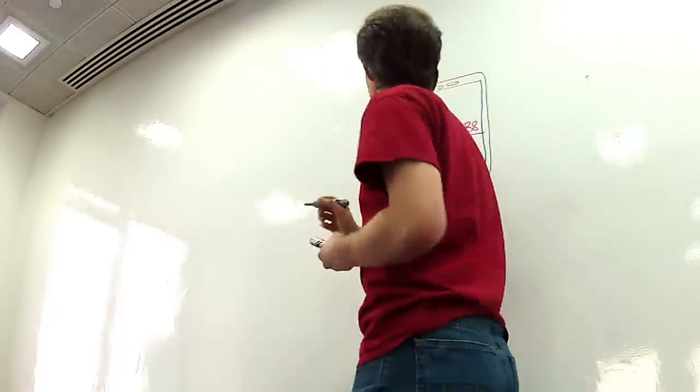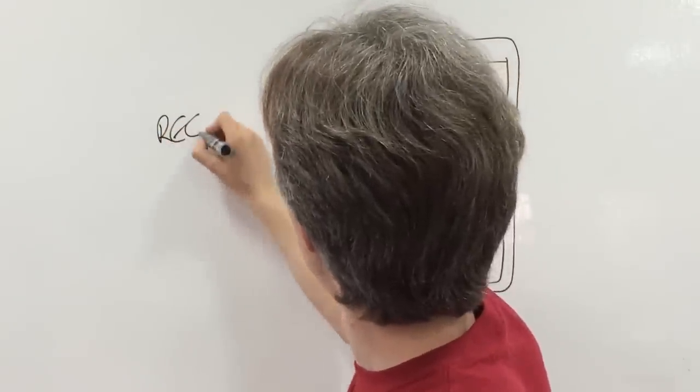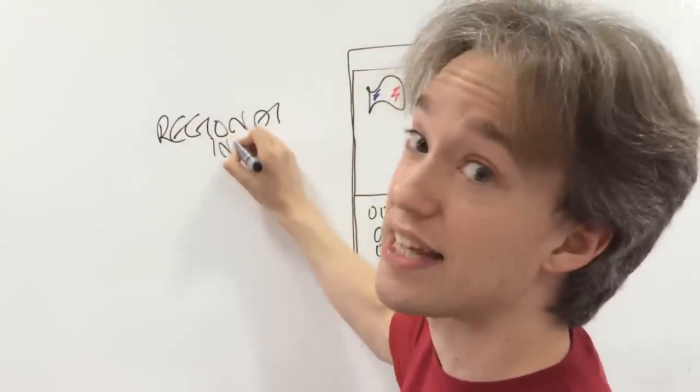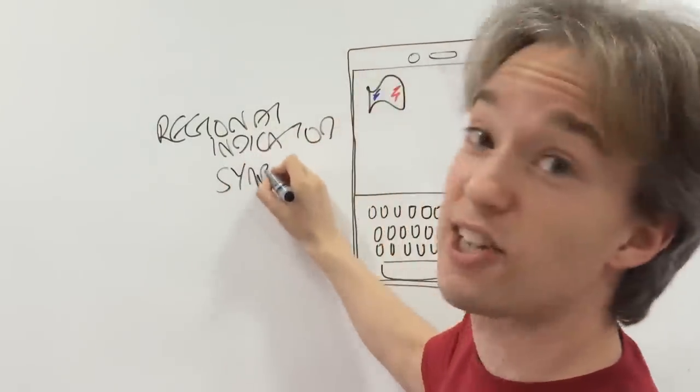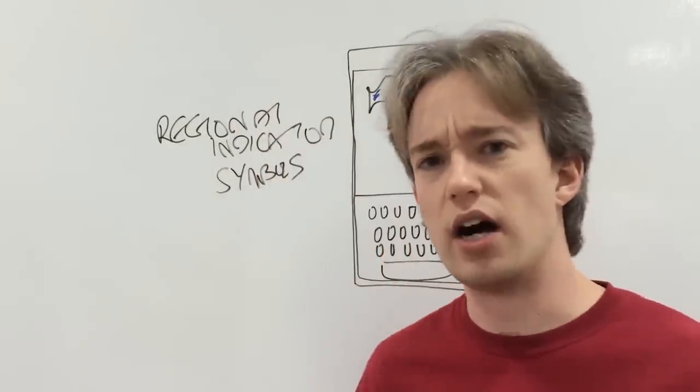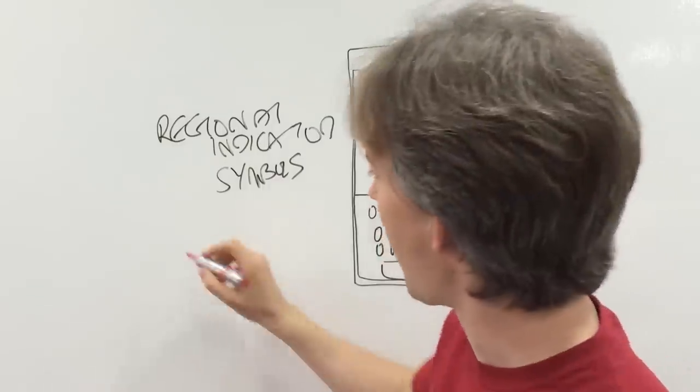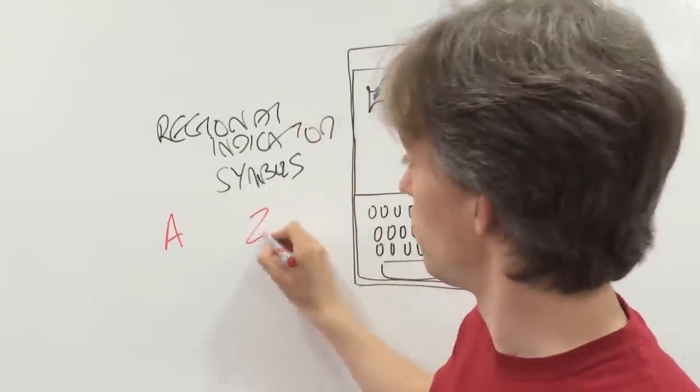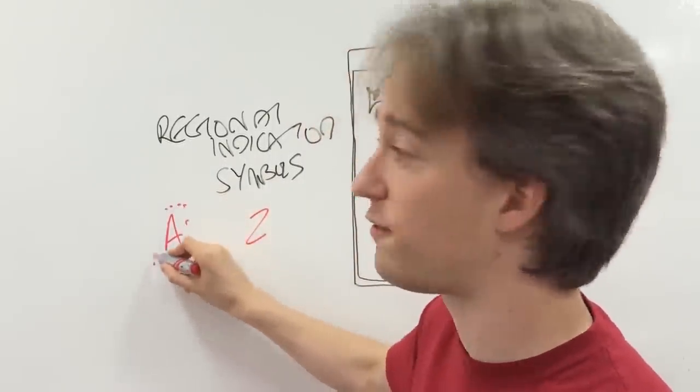So instead, they created something called Regional Indicator Symbols. Oh yeah, I can totally write on a whiteboard. There we go. Regional Indicator Symbols. And what they are, are characters that are simply A through Z, with dots around them. That's the official representation.